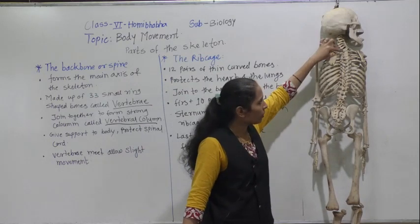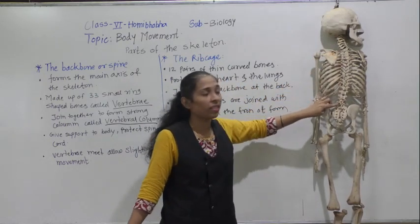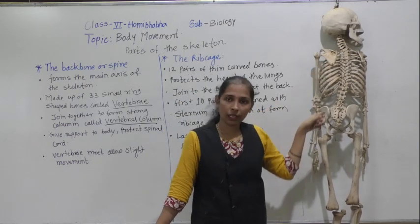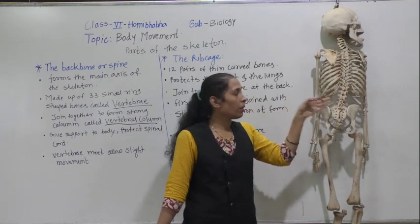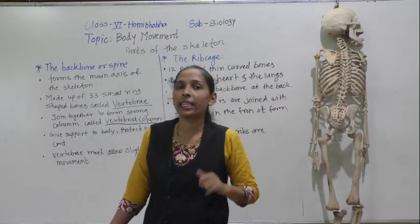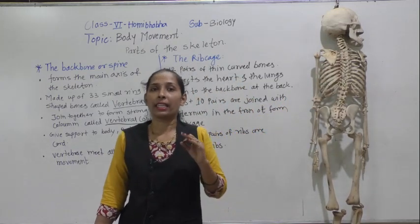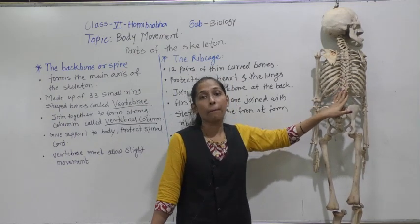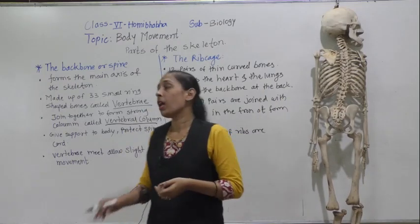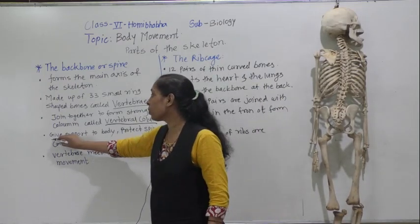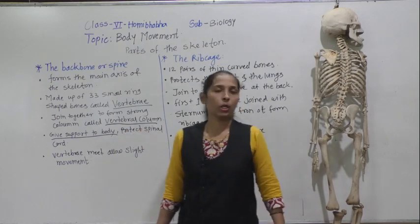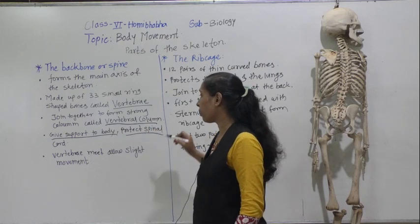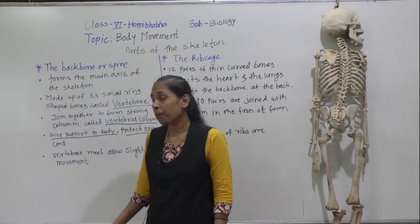There are 33 vertebrae present in the vertebral column. The spinal cord runs through this vertebral column and is protected by it. The backbone or spine also helps give support to our body. So the backbone both supports the body and protects the spinal cord.